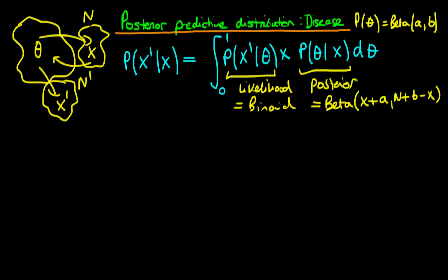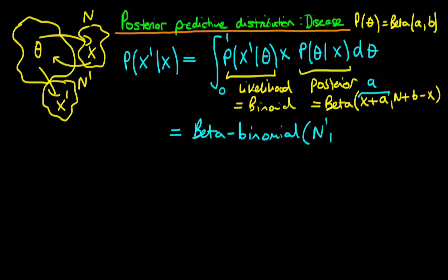We could do this integral by hand, but we don't need to because we've already done an equivalent integral when working out the prior predictive distribution. We know that when integrated, this distribution turns out to be a beta-binomial distribution. The beta-binomial is characterised by three things: the new sample size n-primed, and the parameters a-primed and b-primed of the posterior beta distribution — that is, x plus a as the second argument, and n plus b minus x as the third.